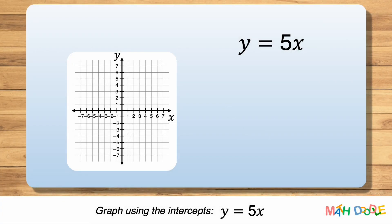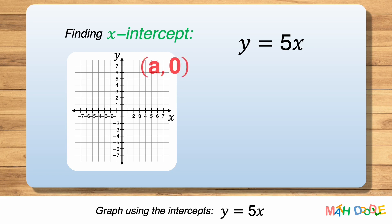To graph the equation y equals 5x, we are going to use the x and y-intercepts of the line. First, let's find the x-intercept. The x-intercept of a line is the point where the line crosses the x-axis, and it has the form of (A, 0). So, to find the x-intercept of the line, we are going to substitute 0 for y and solve the equation for x.